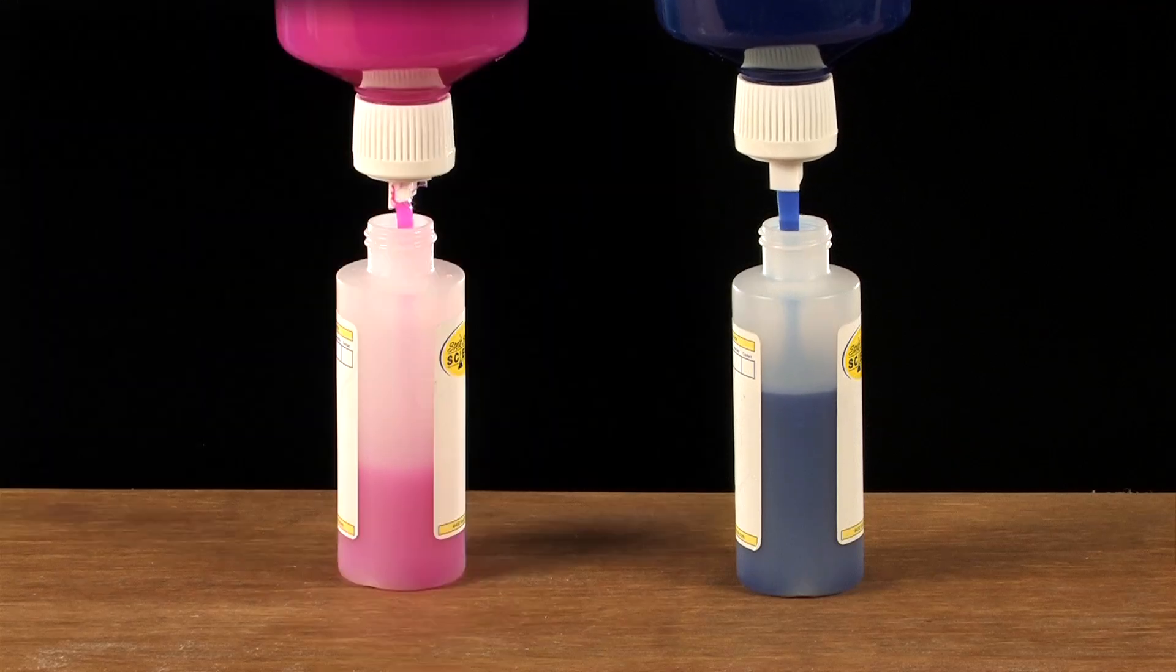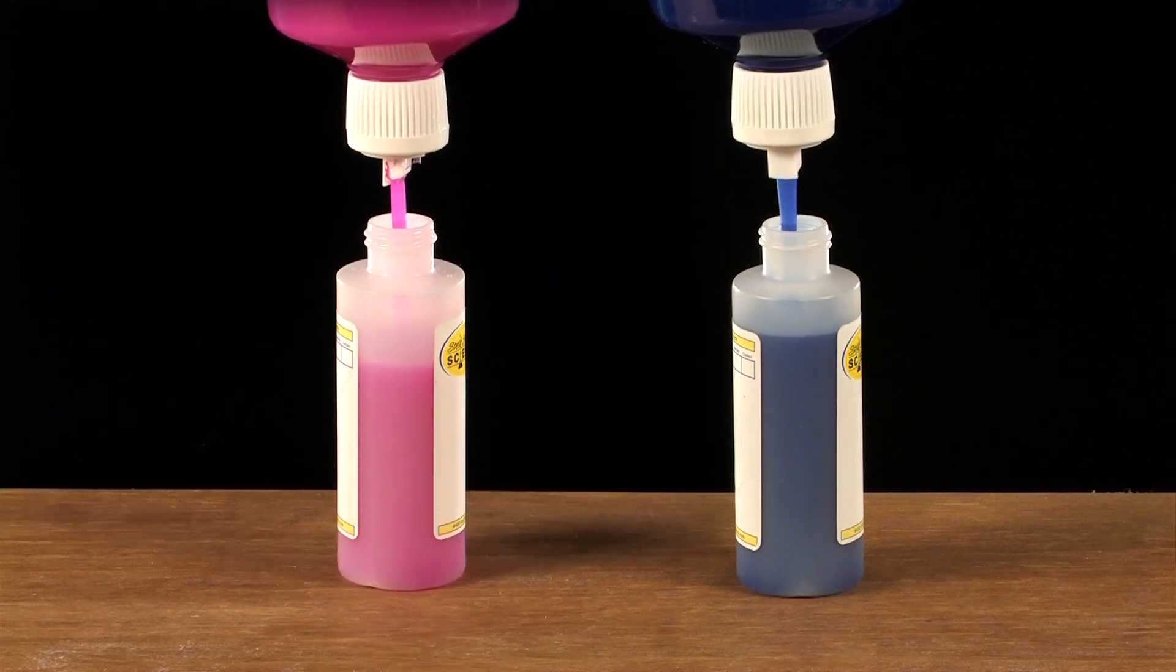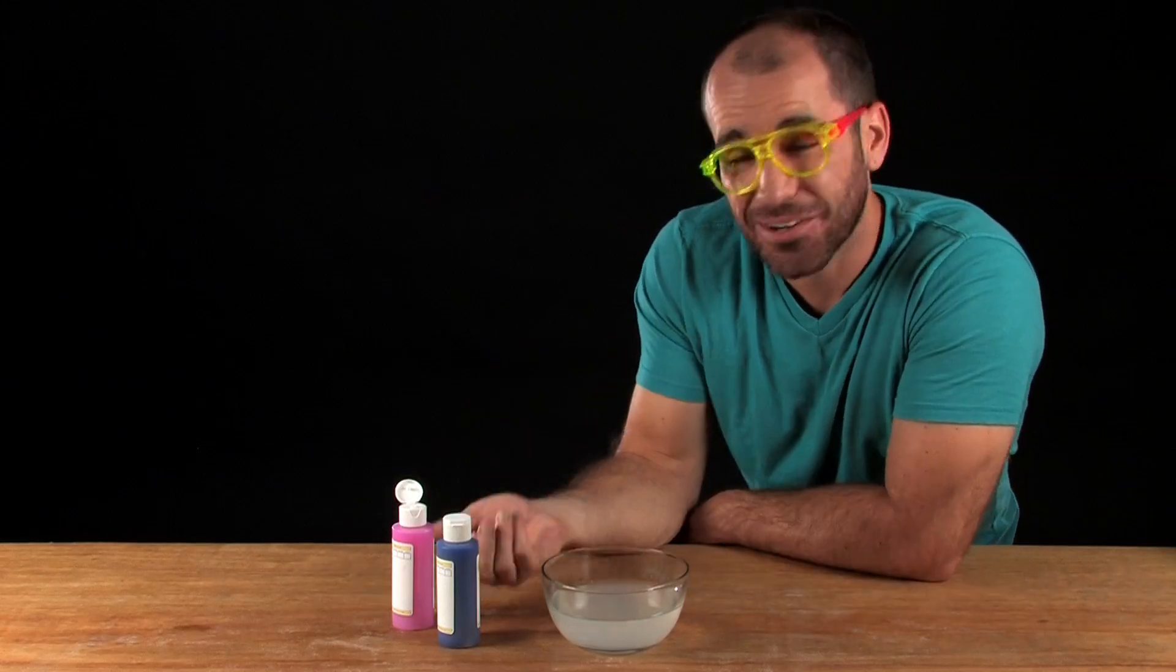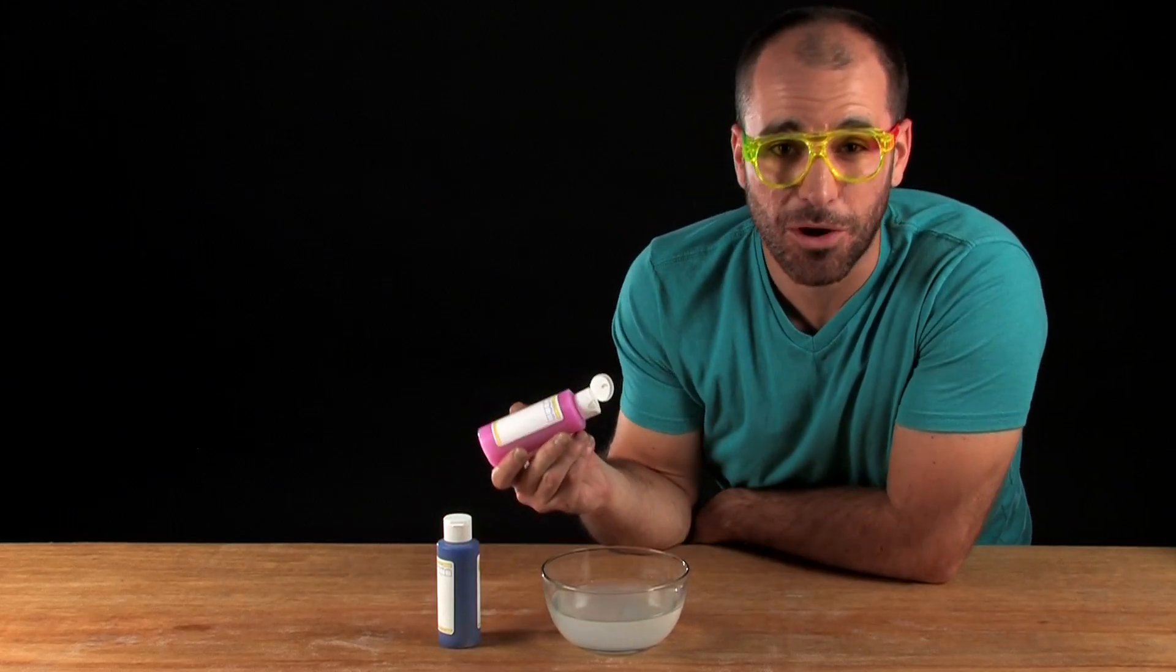To make the experiment more manageable, transfer either the blue or magenta heat-sensitive worm goo into the empty 4-ounce squirt bottle. Now you're ready for the fun part. Take your heat-sensitive worm goo and squirt a small stream into the bowl.